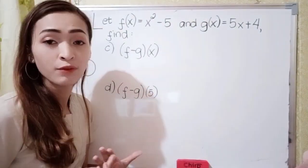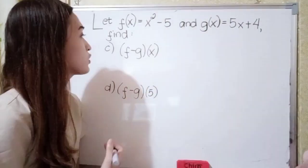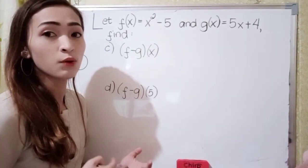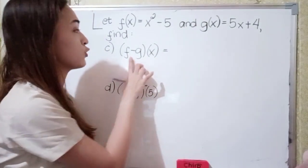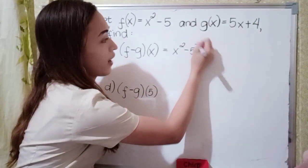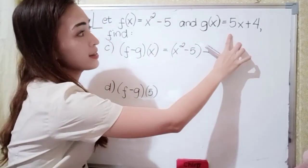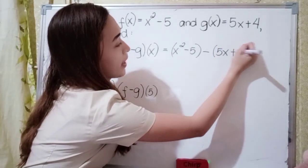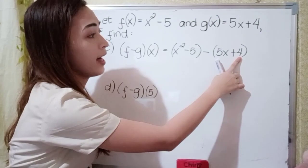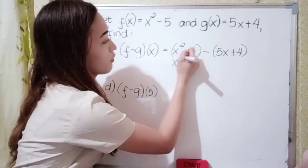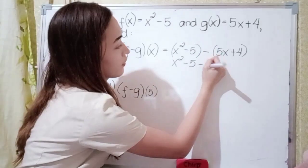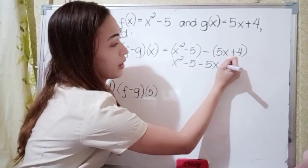Now for letter c, we have the difference of f of x and g of x. And for letter d, we have f minus g of 5. So let's solve for letter c. Our f of x is x squared minus 5, minus our g of x which is 5x plus 4. Since this is minus, we distribute this sign to each term: negative times positive 5x becomes negative 5x, and negative times positive 4 becomes negative 4.